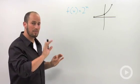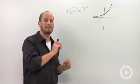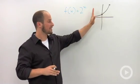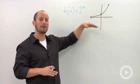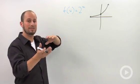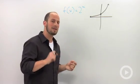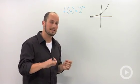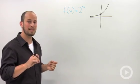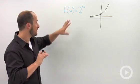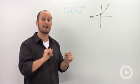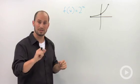Looking at this, we know that this graph is a function, because for every x there's only one y. We also know that it is 1 to 1, because for every y there is one x. So because it's 1 to 1, we know that this function will have an inverse. What I want to do is find out what that inverse is.